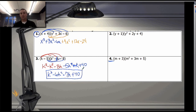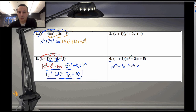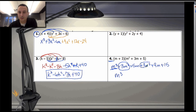Pause the video and try number 4. For number 4: m times m squared is m cubed; m times 3m is positive 3m squared; m times 5 is positive 5m. Then 3 times m squared is positive 3m squared; 3 times 3m is positive 9m; and 3 times 5 is positive 15. Combining: m cubed, then 3m squared plus 3m squared is 6m squared, 5m plus 9m is 14m, and plus 15. Final answer: m cubed plus 6m squared plus 14m plus 15.